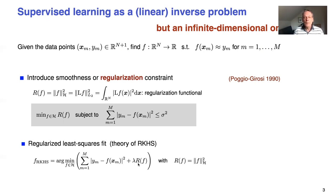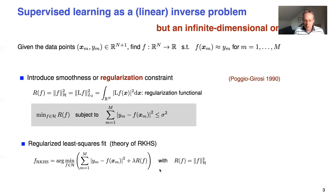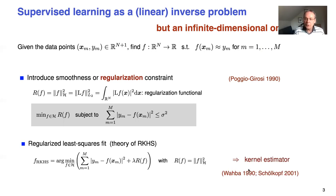If R of f corresponds to a Hilbert norm associated to a reproducing kernel Hilbert space, then you can solve the problem in closed form. What you obtain is a linear combination of kernels. This is very much the foundation of all the kernel methods of classical machine learning, including support vector machines.